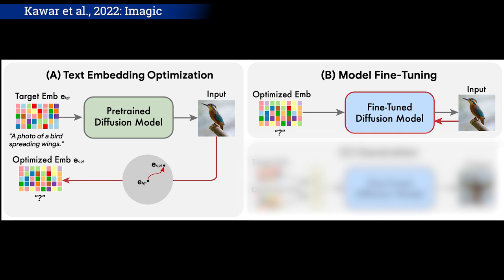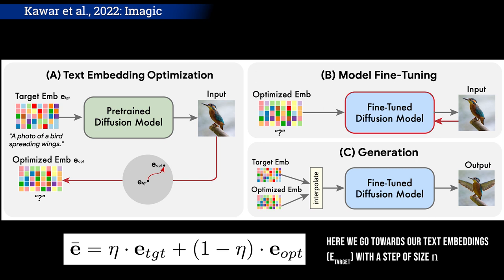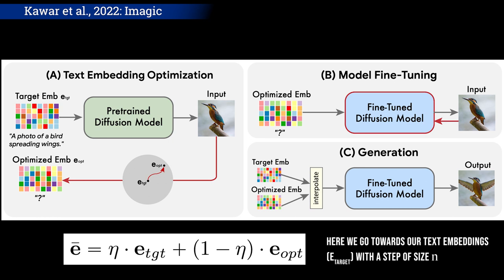Now that our model understands the initial image and our text, and understands that they are similar, we need to teach it to generate new image variations for this text. This part is super simple. Our text embeddings and image-optimized embeddings are very similar, but still not the exact same. The only thing we do here is take the image embedding in our encoded space and move it a bit toward the text embedding. If you ask the Imagic model to generate an image using the optimized text, it should give you the same image as your input. So if you move the embedding a bit toward your text's embeddings, it will edit the image a bit toward what you want. The more you move it in this space, the bigger the edit will be and the farther away you'll get from your initial image. So the only thing you need to figure out is the size of the step you want to take toward your text.